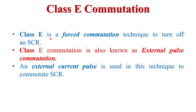Class E commutation is a type of forced commutation technique used to turn off the SCR. In my previous videos I have already explained different methods of forced commutation such as class A, class B, class C, and class D commutation. This is the fifth method, called class E commutation. It is also known as external pulse commutation, because we turn off the main SCR by generating an external current pulse.